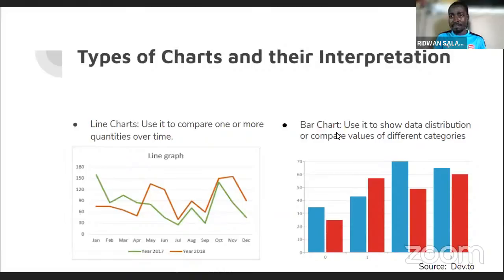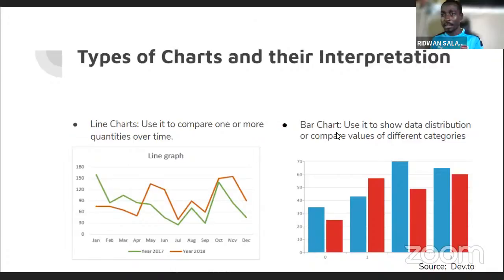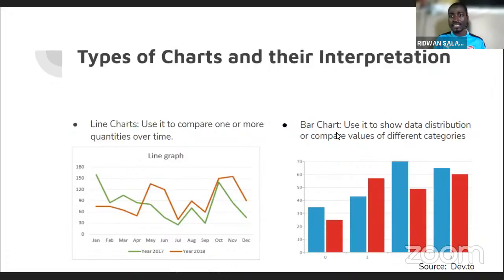For example, consider the population of Nigerians divided into groups: kids aged 0–10, adolescents aged 10–18, youth aged 18–30, adults aged 30–50, and aged 50 and above. Youths might make up 30% of the total population, adolescents 15%, and so on. This shows how these categories are distributed in the population.